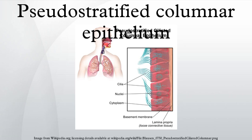Not all ciliated cells extend to the luminal surface. Such cells are capable of cell division, providing replacements for cells lost or damaged. Pseudostratified epithelia function in secretion or absorption.